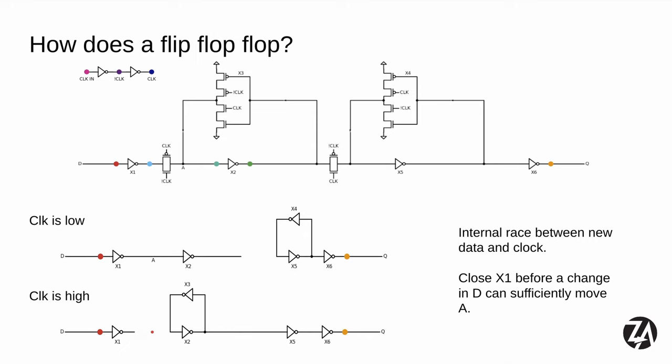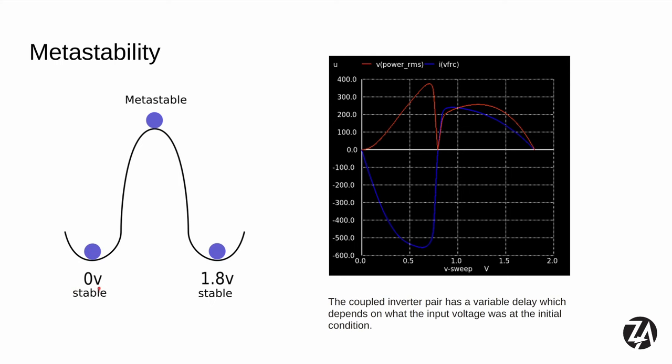There is a race condition between the data coming in and the clock: if the data is changing at the exact moment we sample, we could have something that isn't exactly a zero or a one, and that causes problems — this leads us to metastability. We have our zero state at 0V and our one state at 1.8V; both are stable and it takes work to change from one to the other. But if the D input was at exactly 0.9V at the moment the clock went high, we start right at the metastable point. The circuit doesn't want to stay there, but it will remain there much longer than normal until a fluctuation in the power supply or noise flips it into one of the stable states.